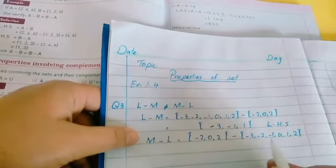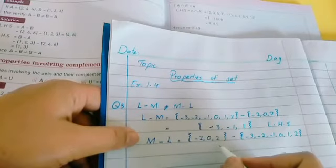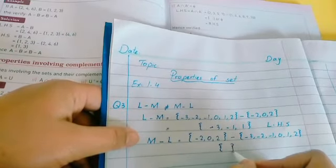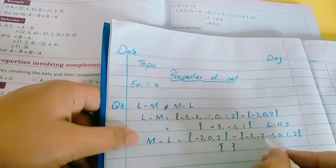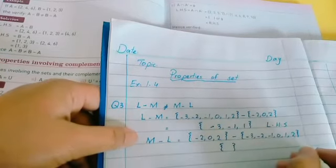When you find out the difference between these two, what do you see? All the M values that are present in M are also present in L. It means their difference is nothing, you will consider it as empty set. Minus 2 is here and also here, 0 is here and also here, 2 is here and also there.